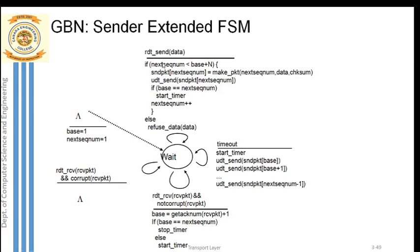The packet can only be transmitted when it is inside the window. Suppose the packet is not inside the window - that means next sequence number is greater than or equal to base plus n - you have to refuse that data; you cannot transmit it. If the packet is outside the window, you refuse transmission. Once the packet is transmitted, you wait for the acknowledgement at the sender side.